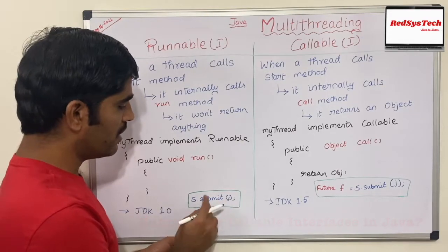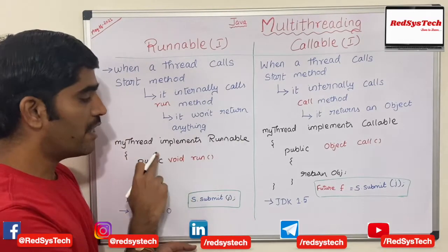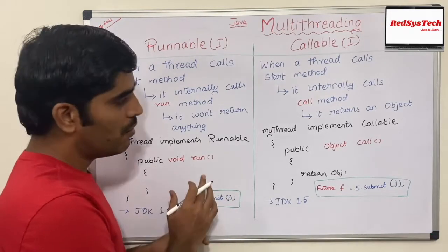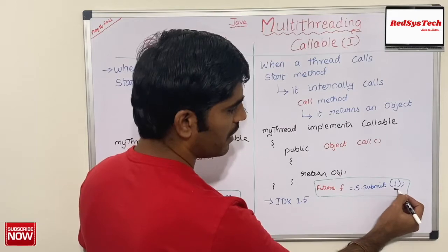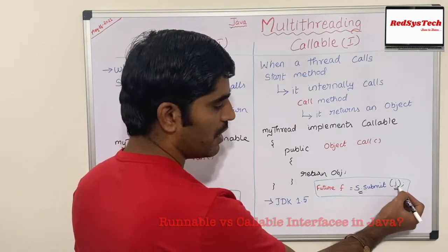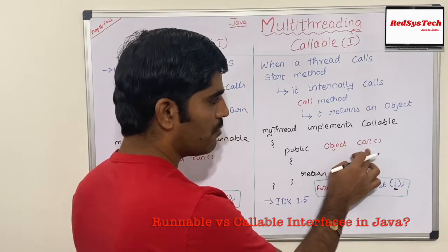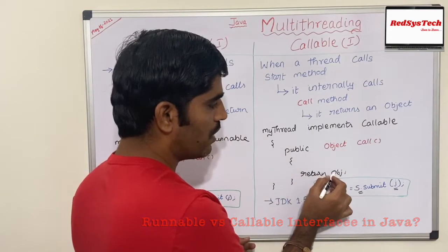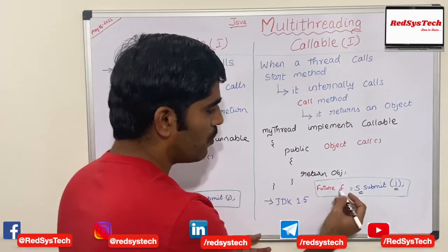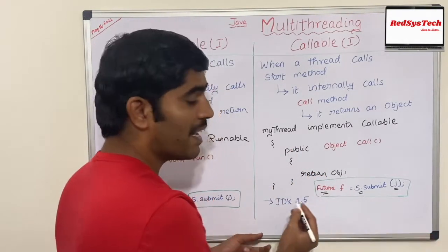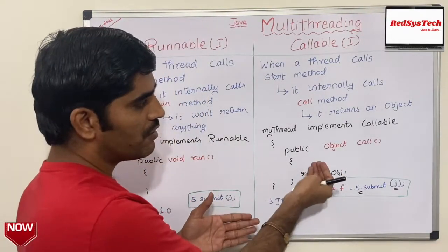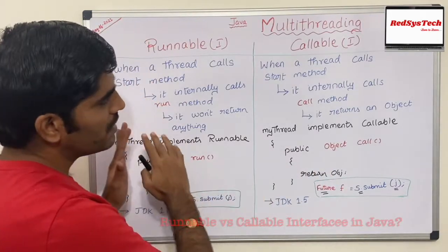When using Runnable, s.submit(j) just executes the void run method and doesn't return anything. But when using Callable, s.submit(j) calls the call method and returns an object. Whatever object the call method returns has to be stored in a Future. There is a class called Future in Java — using this Future class, you store whatever object is returned from the call method.